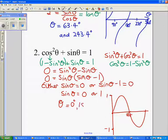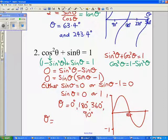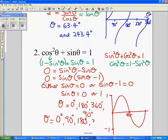So the graph is equal to 0 at 0 degrees, at 180 degrees, at 360 degrees, and it's equal to 1 at 90 degrees. So putting that all in order then, is θ equals 0 degrees, 90 degrees, 180 degrees, and 360 degrees.